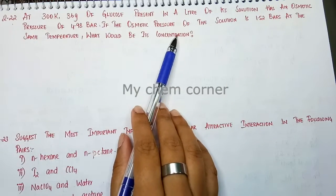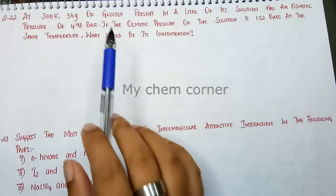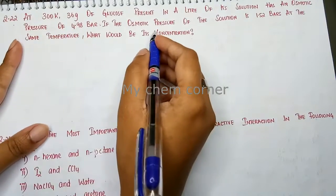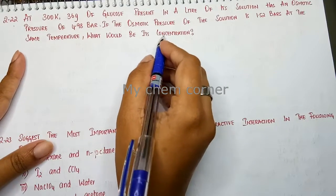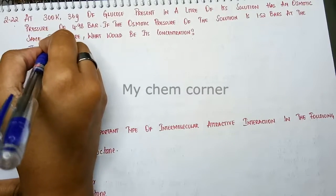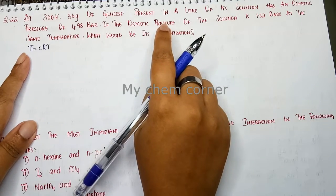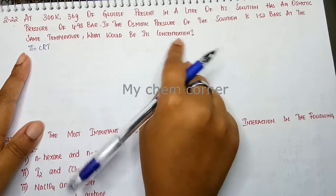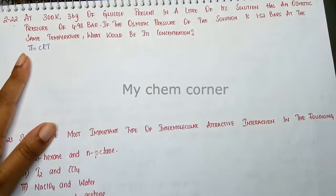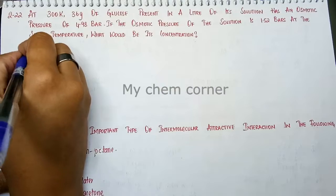Two conditions are given here. Because osmotic pressure is asked, we are going to use the formula π = CRT, where the concentration in this case means molarity. For the first condition, we write down the equation.